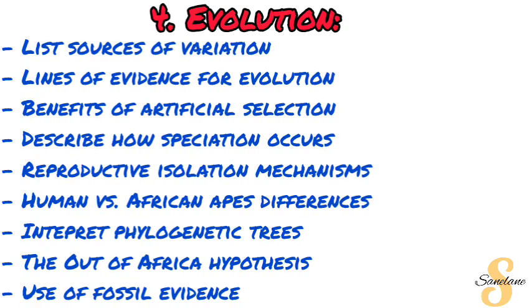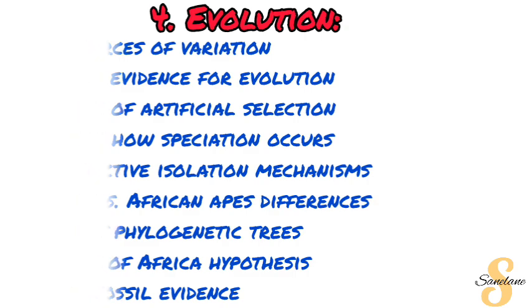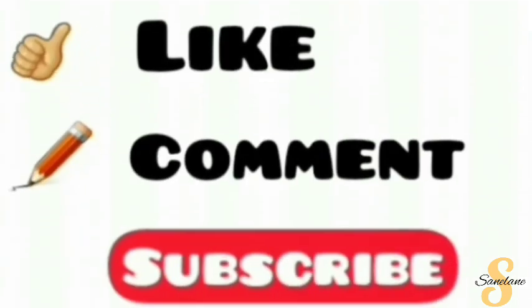The fourth topic is Evolution. Under it, you need to be able to list the sources of variation, give the lines of evidence for evolution, describe the benefits of artificial selection, describe how speciation occurs and reproductive isolation mechanisms, give the differences between humans and African apes, interpret phylogenetic trees, and explain the Out of Africa hypothesis — all of which needs to use fossil evidence.